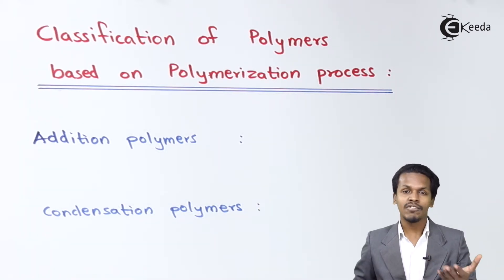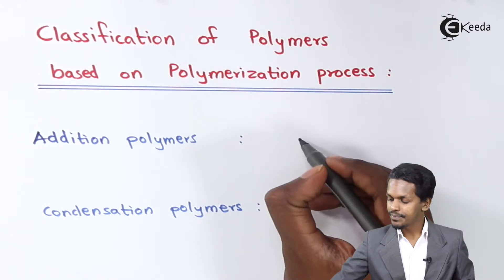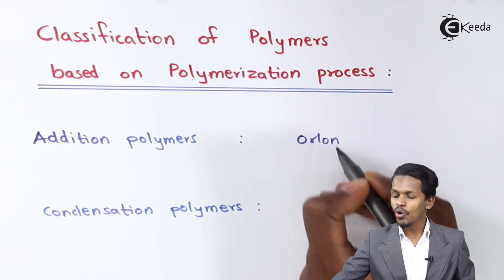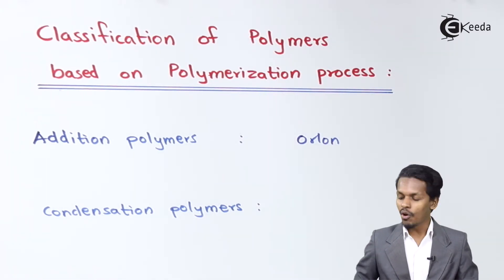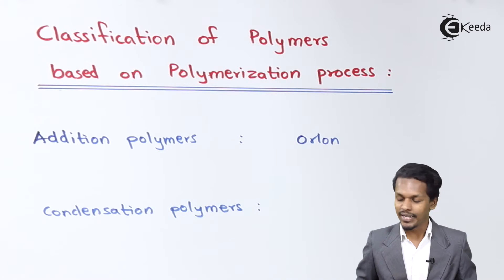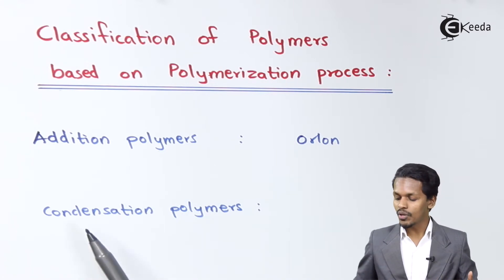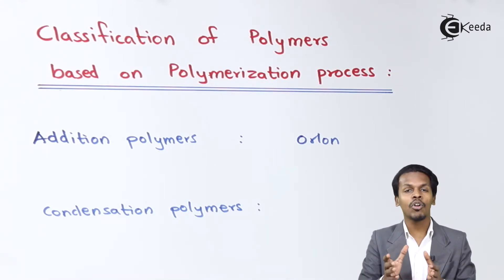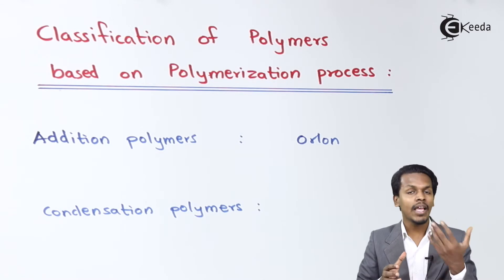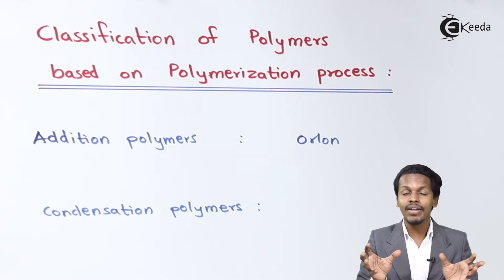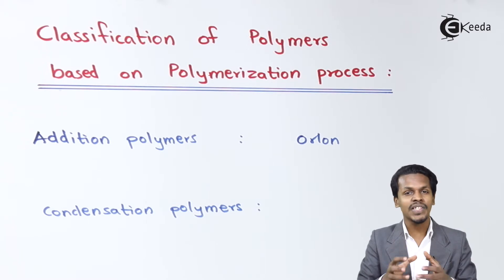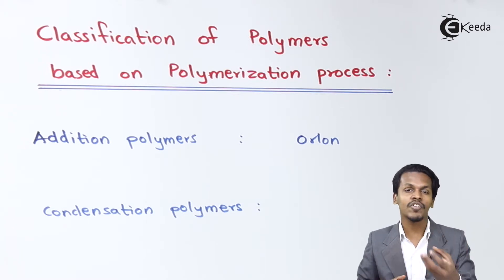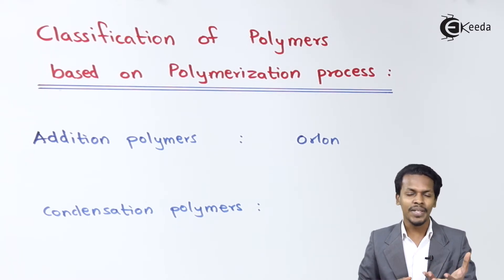For example, orlon is an example of an addition polymer. Condensation polymers, on the other hand, are polymers obtained from monomers where, whenever they go through a condensation process, there will be an elimination of smaller molecules like water, methanol, or ethanol.